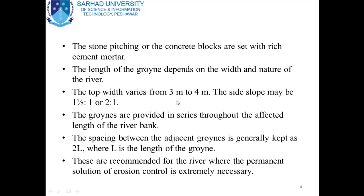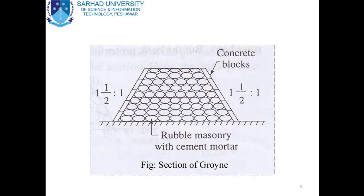Their top width is about 2 to 4m and the side slopes are 1.5:1 or 2:1. Their length depends upon the nature of the river. Here is a section of a groin: rubble masonry with rich cement mortar is provided, and concrete blocks or stone pitching is provided on the sides with side slopes of 1.5:1.